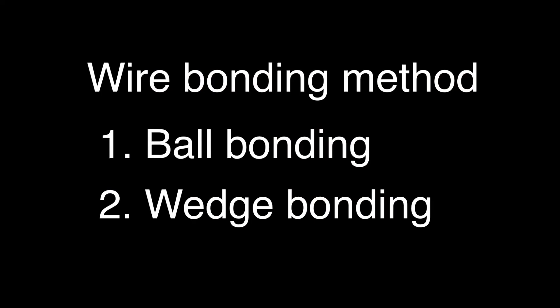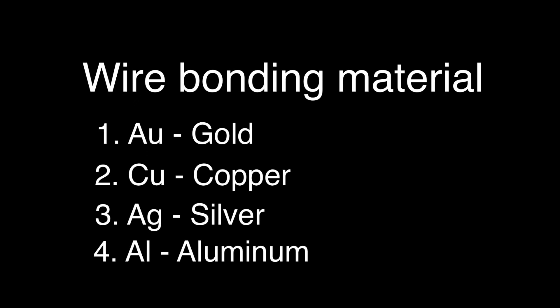In summary, there are two major wire bonding methods: ball bonding and wedge bonding. There are four major wire bonding materials. Gold is the most popular. Copper is getting popular thanks to its low cost, but it is hard and easy to oxidize, so special care is required. Silver is good for sensitive die pad devices and LED devices with lower cost than gold. Aluminum is good for high current carrying applications with thick diameters.